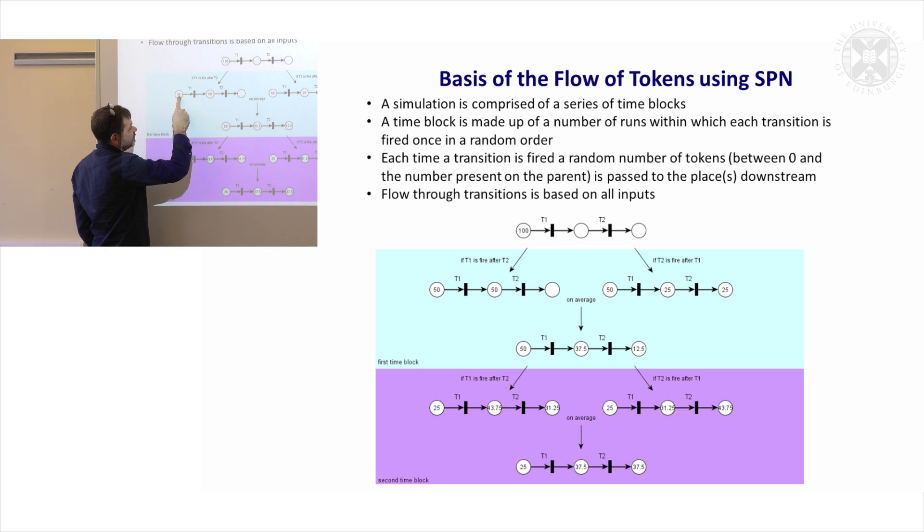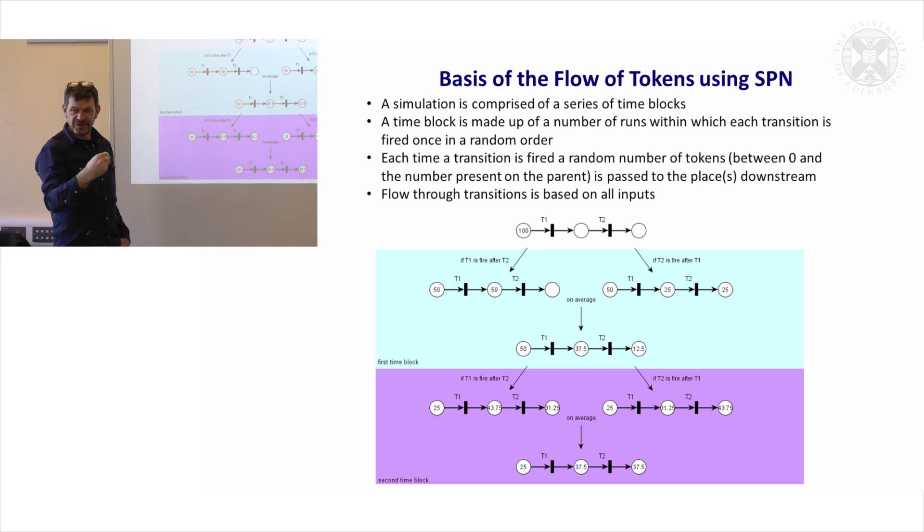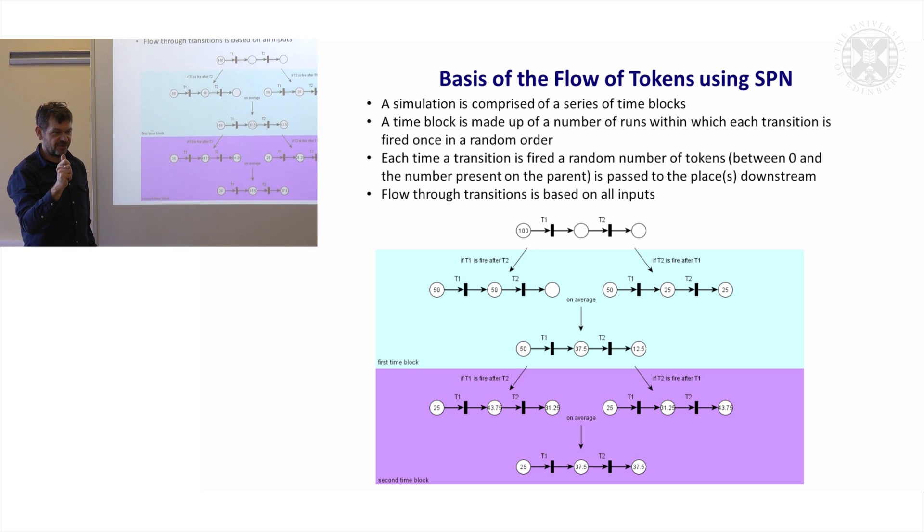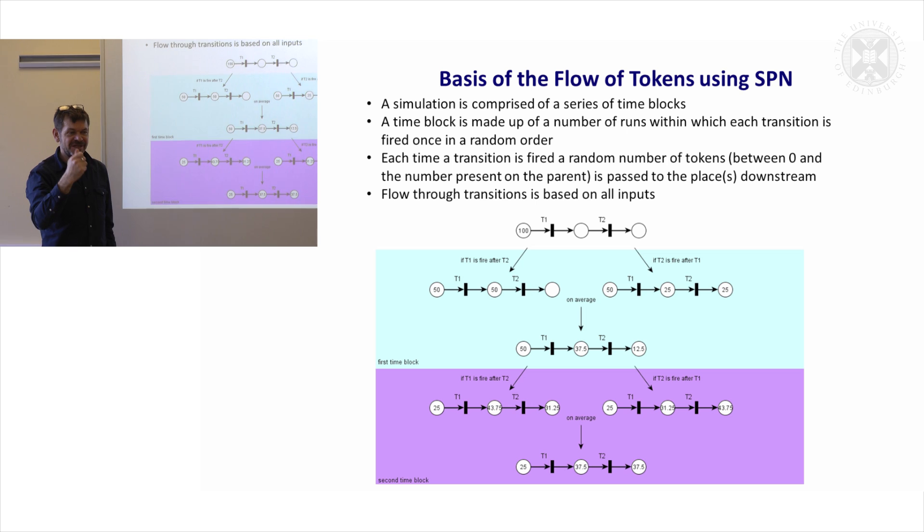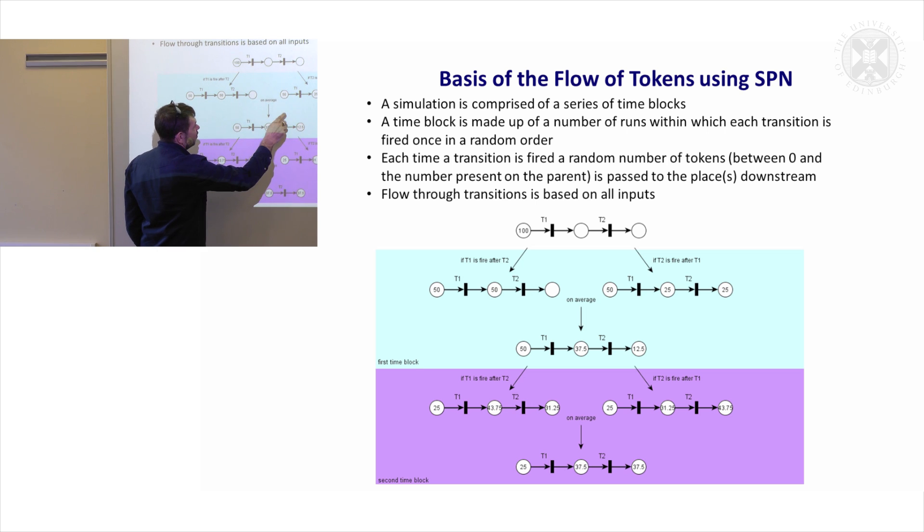If T1 fires first, then tokens can move over here and we move, on average, 50 tokens, but it's random. On average it will be 50, but in reality, in any given firing, it could be 0 to 100. If you fired it a million times, the approximate answer would be 50, because it would be an average of all those random firings.